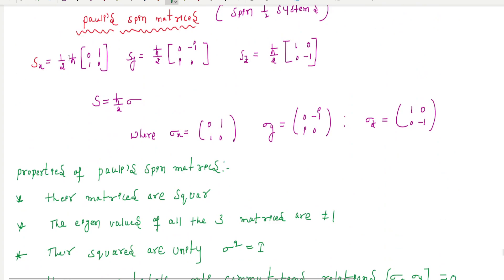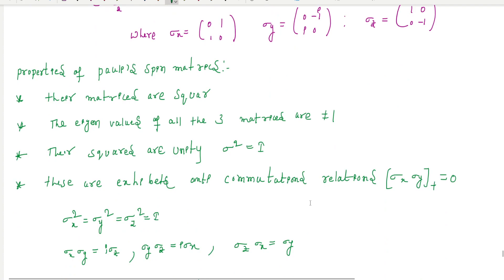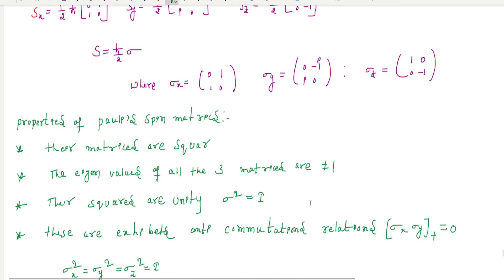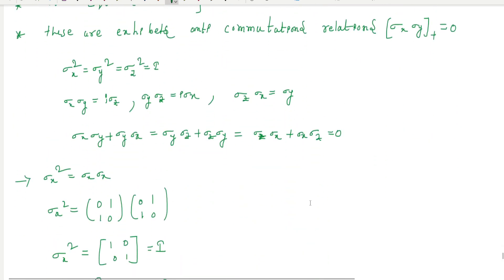Sigma squared commutes with each component of the group. These are the important properties of Pauli's spin-half systems. Similar properties are there for 4x4 matrices. This is all about Pauli's spin matrices and their important properties. In the next class I am going to discuss spin-orbit coupling, and after that the CG coefficients.